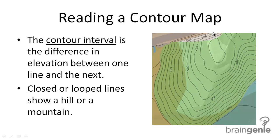When you read a contour map, each connecting line represents a certain altitude. You can look at the map to see how the altitude changes and if there's a land formation on the map. So each of these lines represents one altitude.